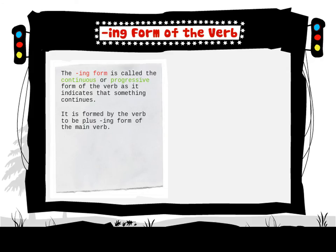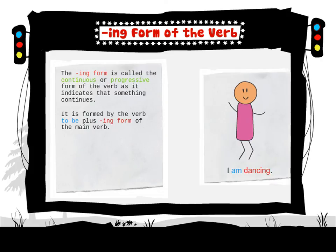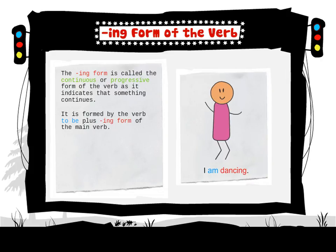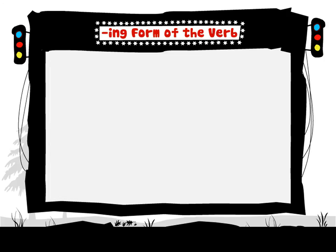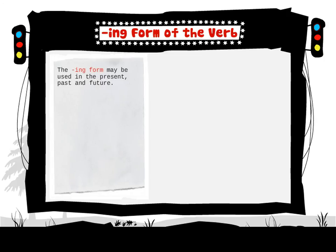It is formed by the verb 'to be' plus the ING form of the main verb — for example, 'I am dancing.' The ING form may be used in the present, past, and future.